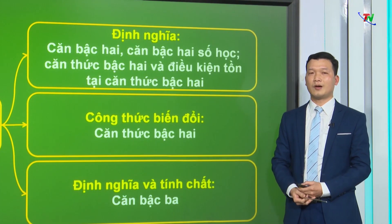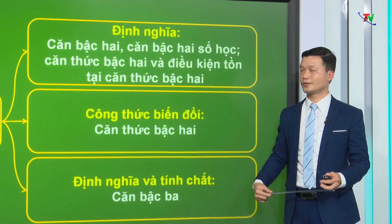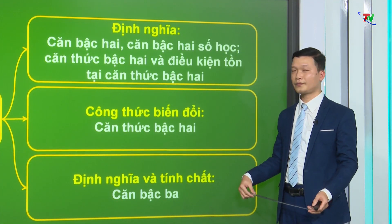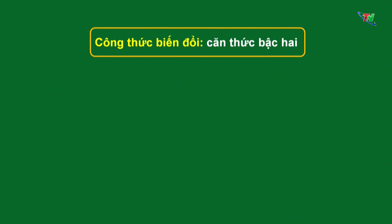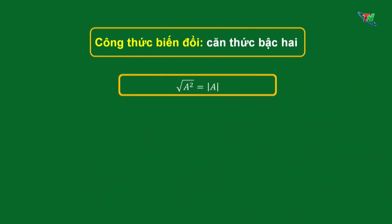Lý thuyết tiếp theo là định nghĩa và tính chất của căn bậc 3. Về công thức biến đổi căn thức bậc 2, công thức đầu tiên là hằng đẳng thức căn(A²) bằng giá trị tuyệt đối của A. Giá trị tuyệt đối của A sẽ bằng A nếu A lớn hơn hoặc bằng 0, và bằng âm A nếu A nhỏ hơn 0.